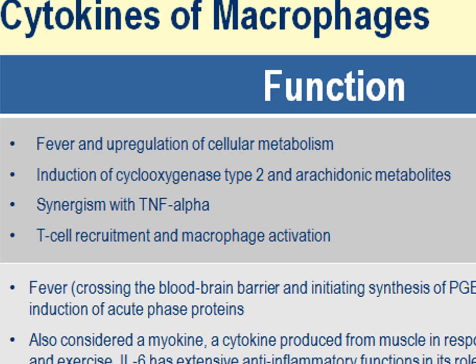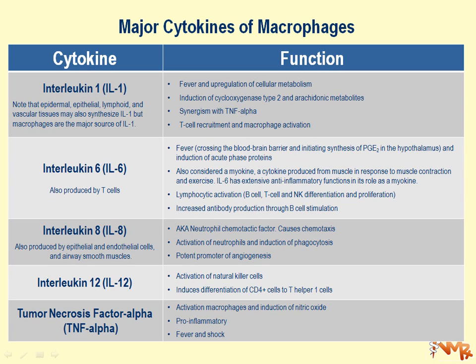Interleukin-1 synergizes with tumor necrosis factor alpha, which is another product of macrophages. It also causes T-cell recruitment and activation of the same macrophage or other macrophages. The other product is interleukin-6. Just to know, interleukin-6 is also produced by T-cells.